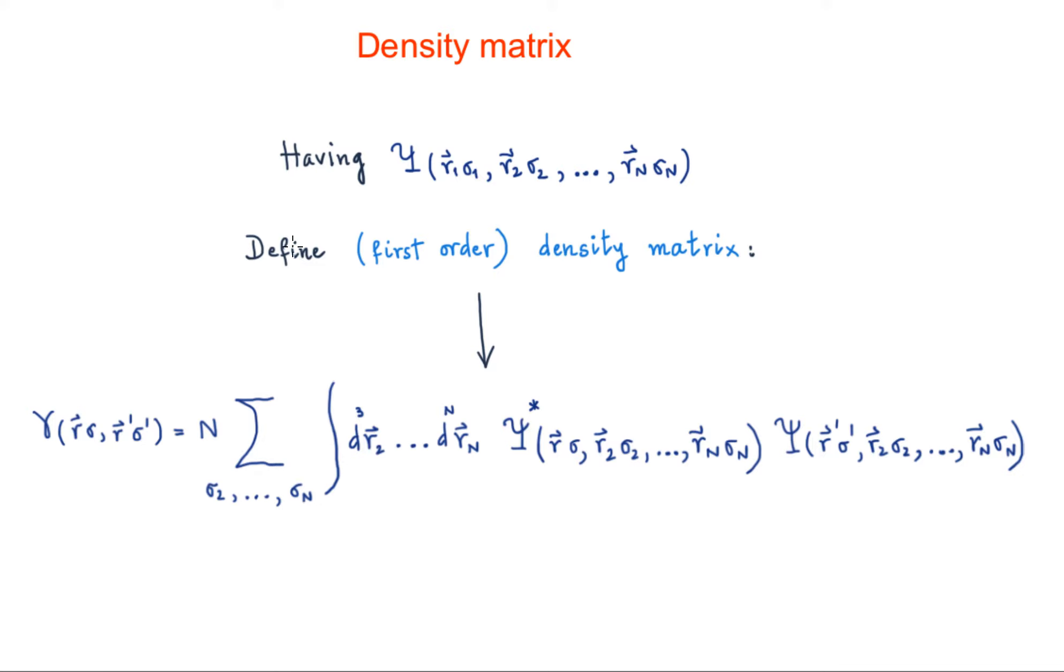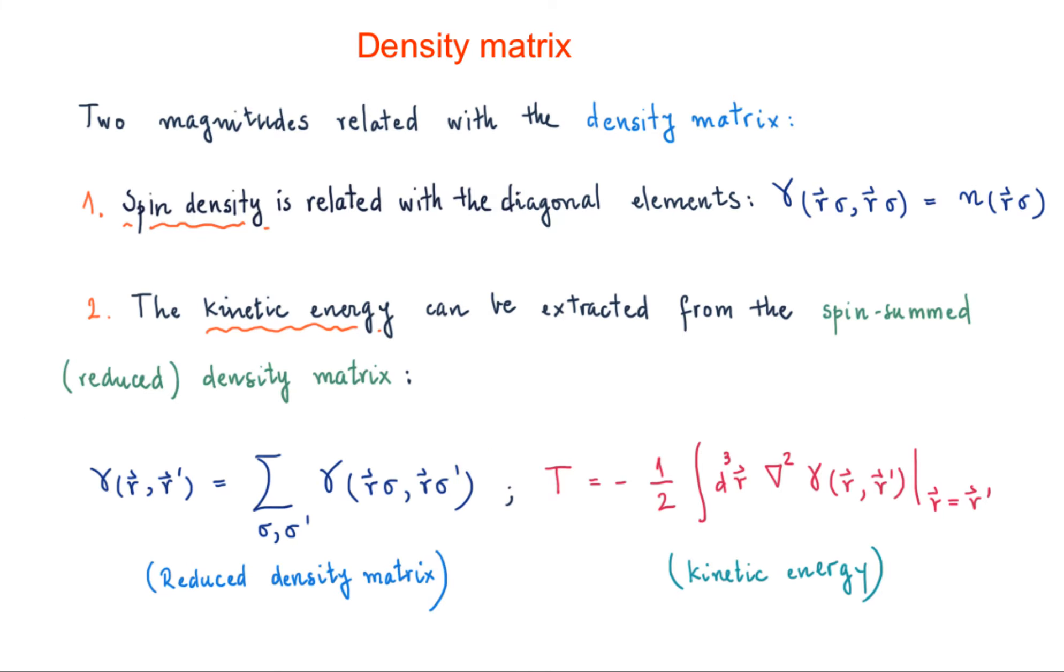Once we have defined this density matrix, we can see that there are two magnitudes which are actually related with the density matrix.